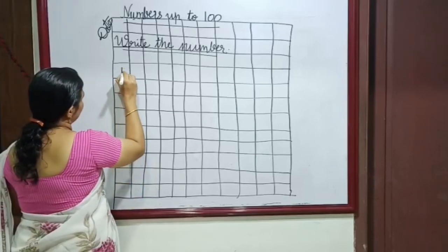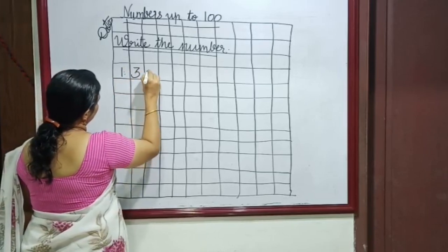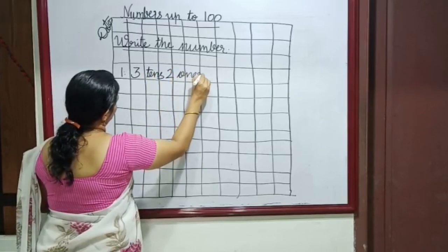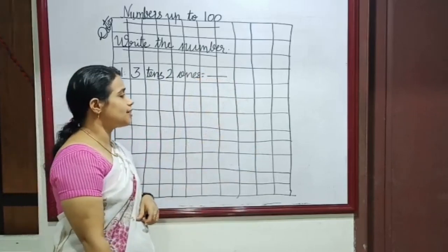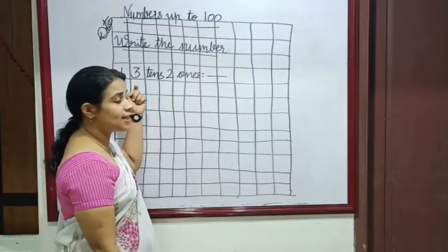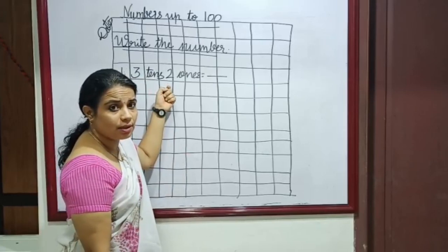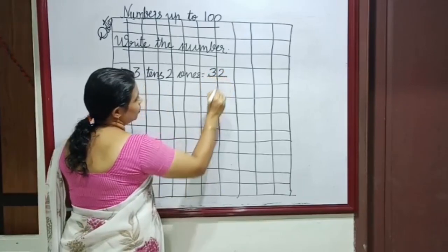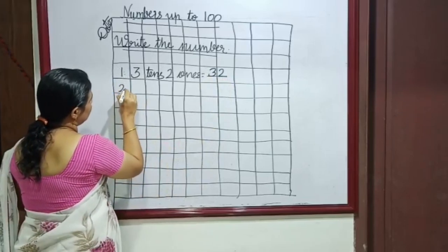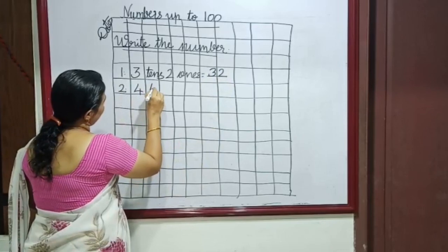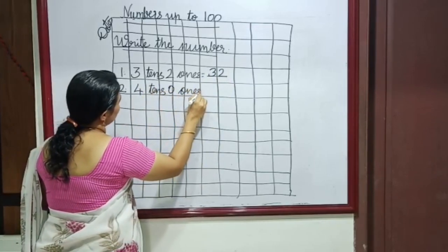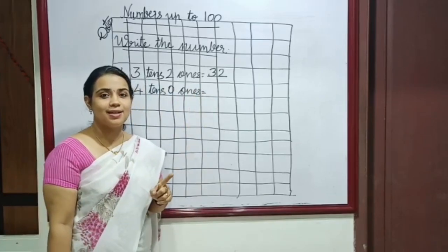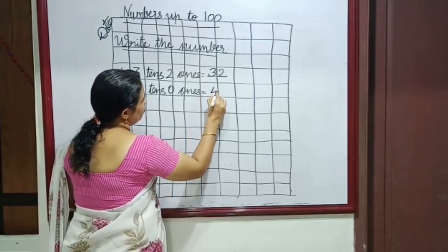First question: 3 tens and 2 ones make — how many tens are here? 3 tens. How many ones are here? Yes, 2 ones. So the number is 32. 2nd question: 4 tens and 0 ones. Tell me — 4 tens and 0 ones. Yes, 40.